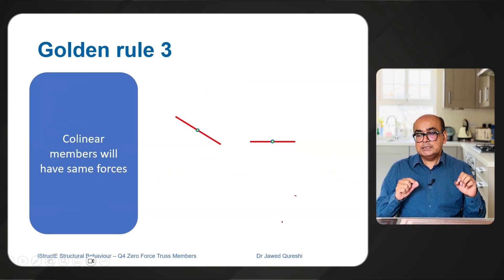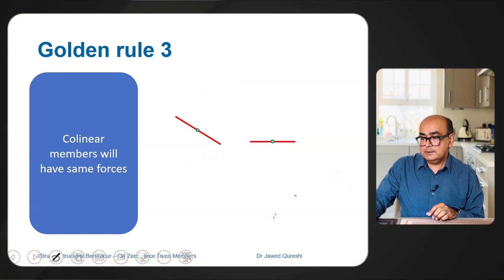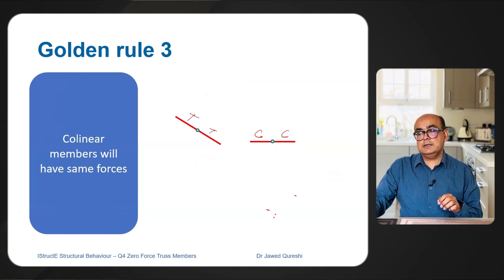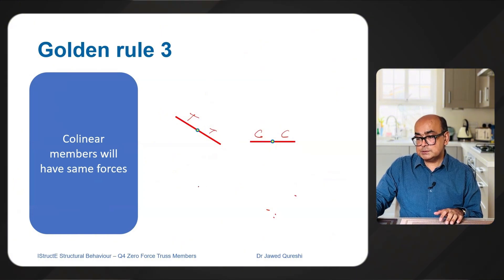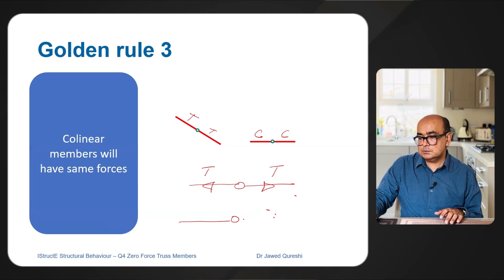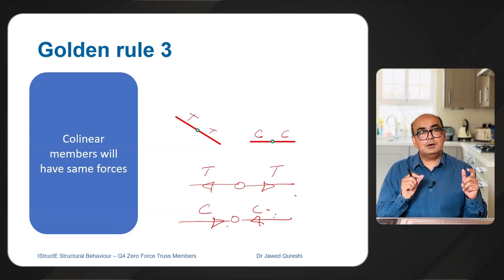The third and most important rule is that collinear members will have the same forces. For example, if we have compression on the left side we will have compression on the right side; if we have tension on one side the other side will have tension as well. Remember: arrows pointing away from the joint indicate tension, and arrows pointing towards the joint indicate compression. Zero force members will have no arrows.